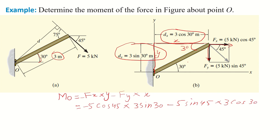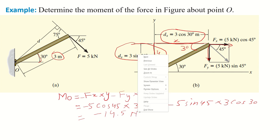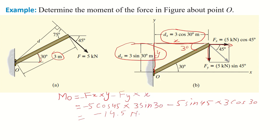As both components FX and FY are trying to move the member in the clockwise direction, both components are negative. Solving this, the answer is negative 14.5 kilonewton-meters.